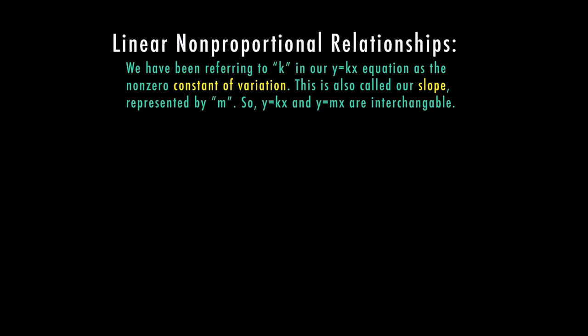In the last couple of videos, if you haven't watched them, you can find those linked below. We have been referring to k in our y equals kx equation as the nonzero constant of variation. This is also called our slope, which can be represented by the letter m. So y equals kx and y equals mx are interchangeable.